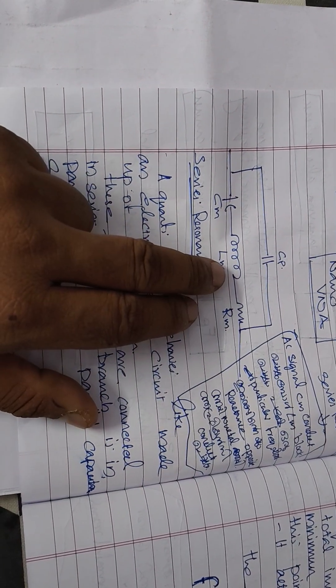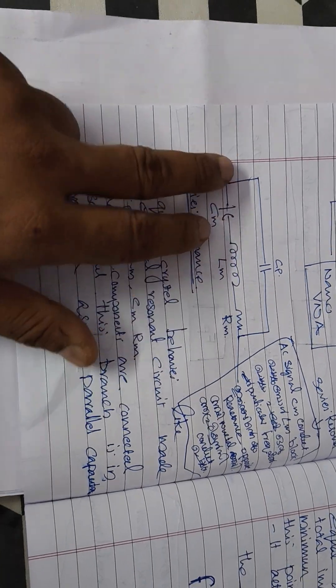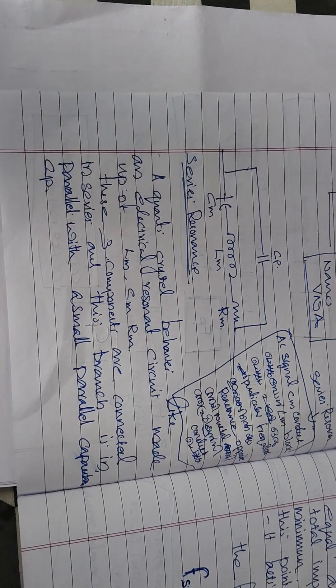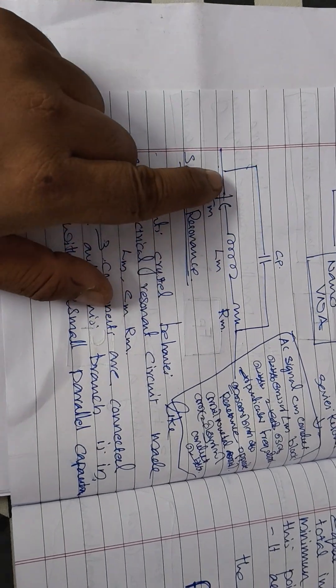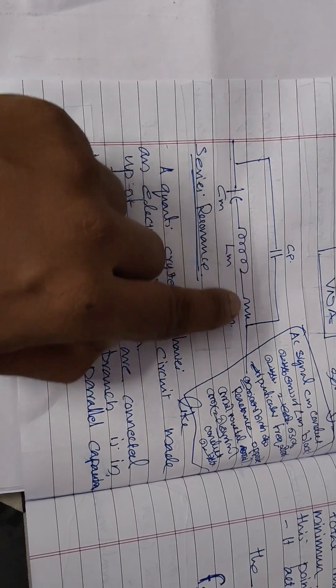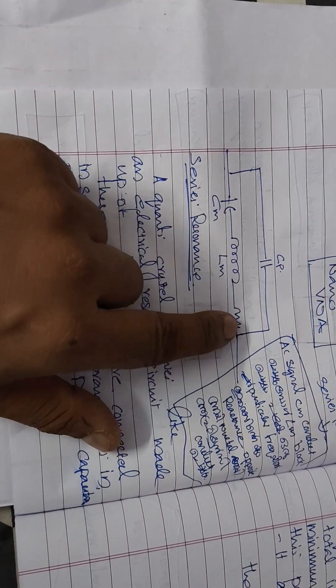But at a particular frequency, the signal will pass through these three components and reach here. That particular frequency is known as the series resonance frequency of the quartz crystal.